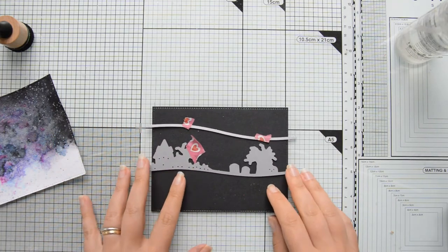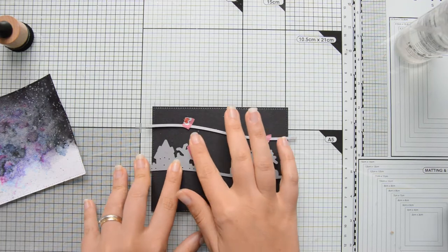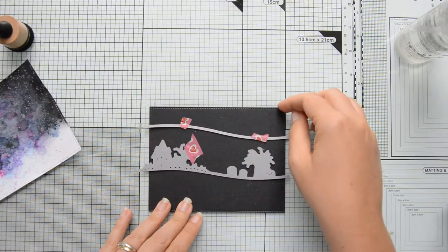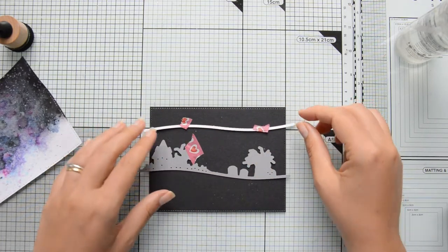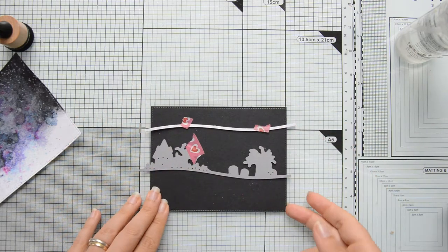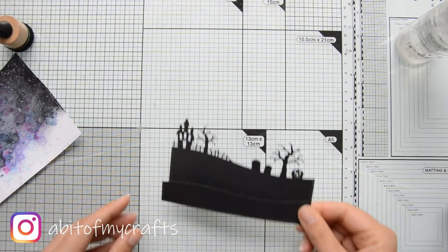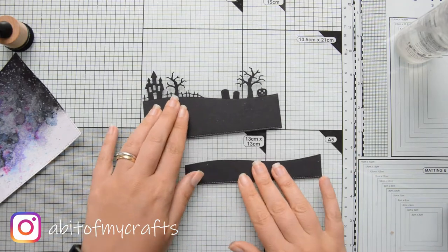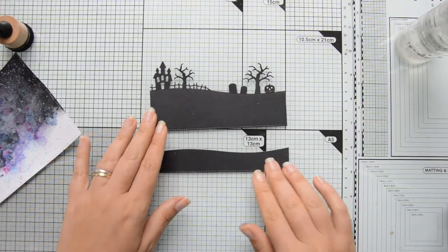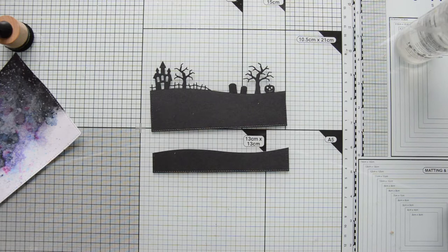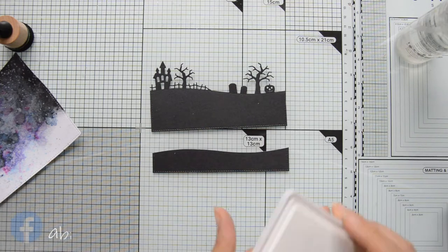I then created two hills using dies from the Spooky Scape set and the Tree Scape set, both by Sugar Pea Designs. I die cut some black cardstock which I had previously die cut with that same stitched rectangle die that I used for the sky.